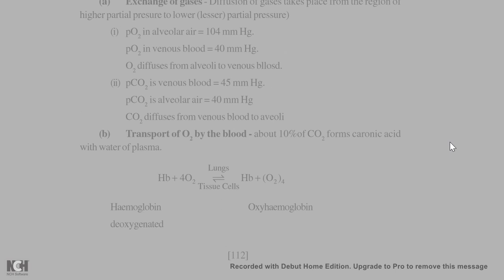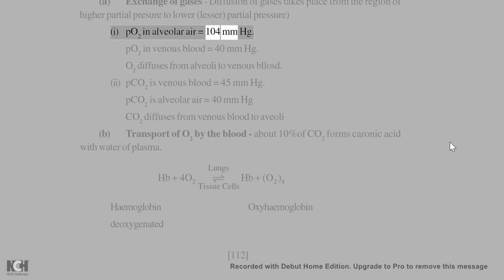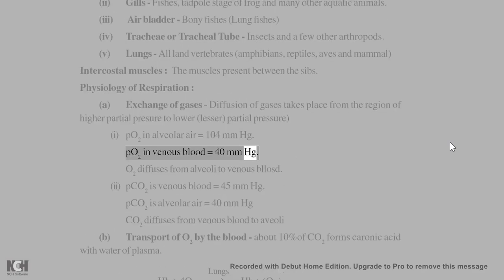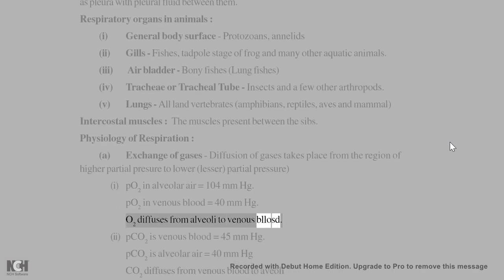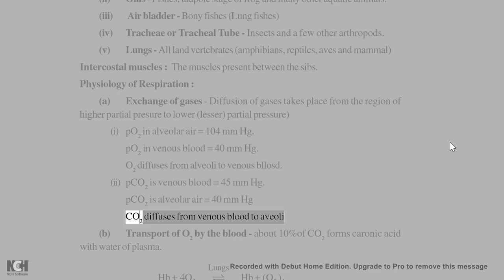Physiology of respiration — Exchange of gases: Diffusion of gases takes place from the region of higher partial pressure to lower partial pressure. PO2 in alveolar air = 104 mmHg; PO2 in venous blood = 40 mmHg — therefore O2 diffuses from alveoli to venous blood. PCO2 in venous blood = 45 mmHg; PCO2 in alveolar air = 40 mmHg — therefore CO2 diffuses from venous blood to alveoli.